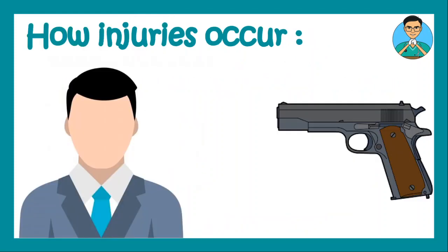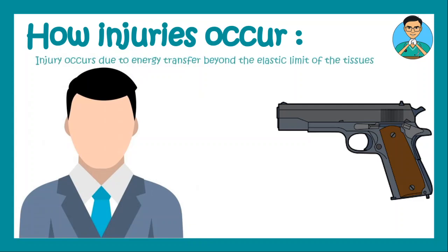Now let us see how injury occurs. Injury occurs due to energy transfer beyond the elastic limit of the tissues. For example, a gun fires a bullet and it hits the skull of a man. This bullet, when fired, contains kinetic energy. When the bullet hits the head, the kinetic energy gets transferred to the skull and tissue. When this energy transfer crosses the elastic limit of the skin and skull bone, then injury occurs.